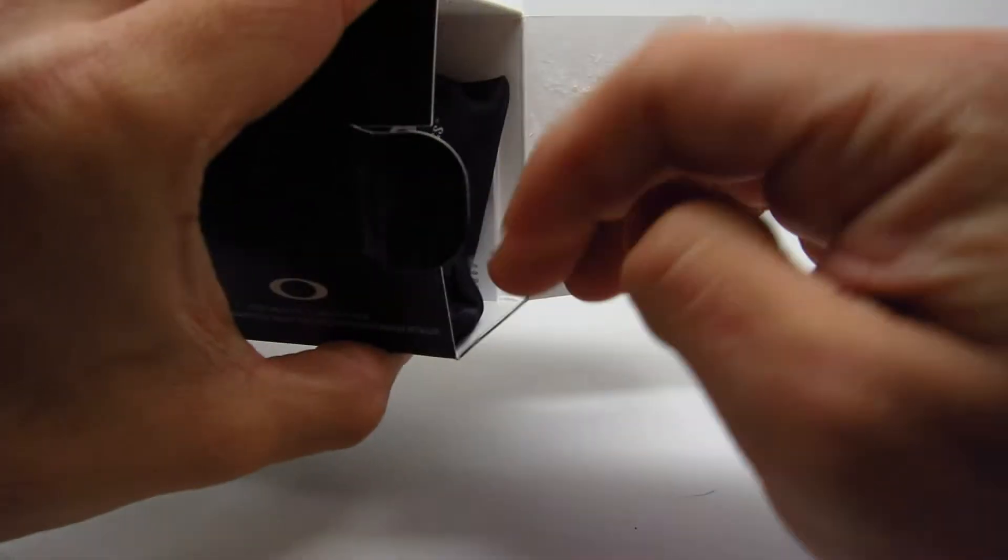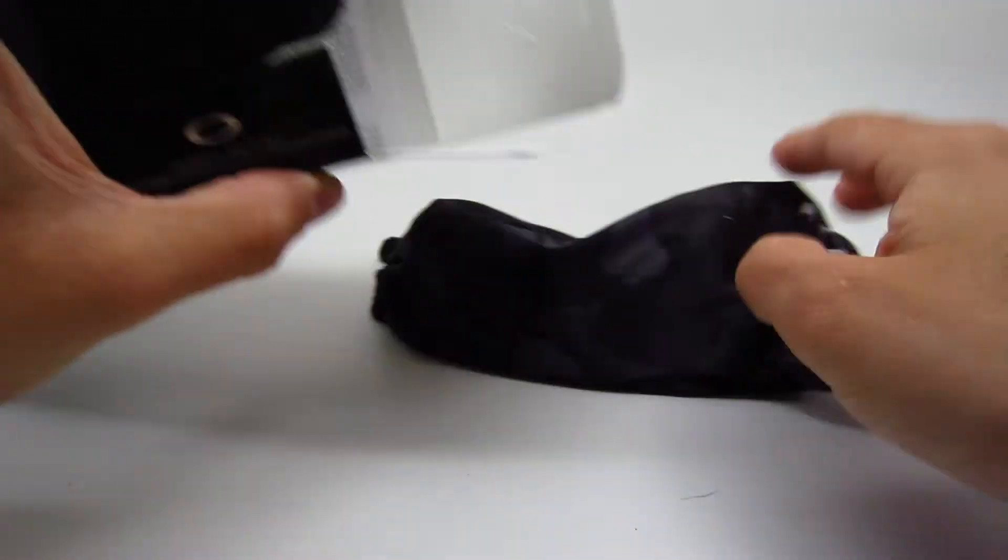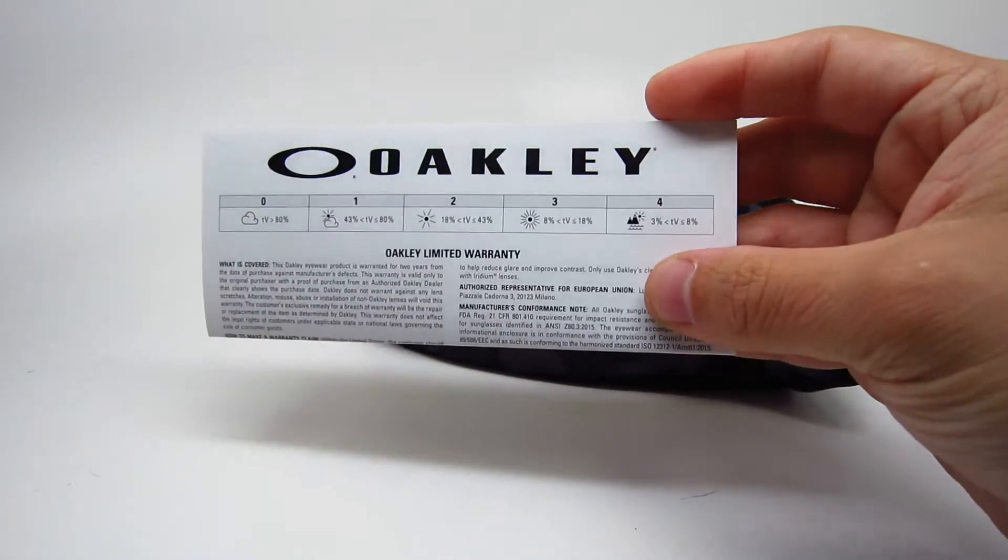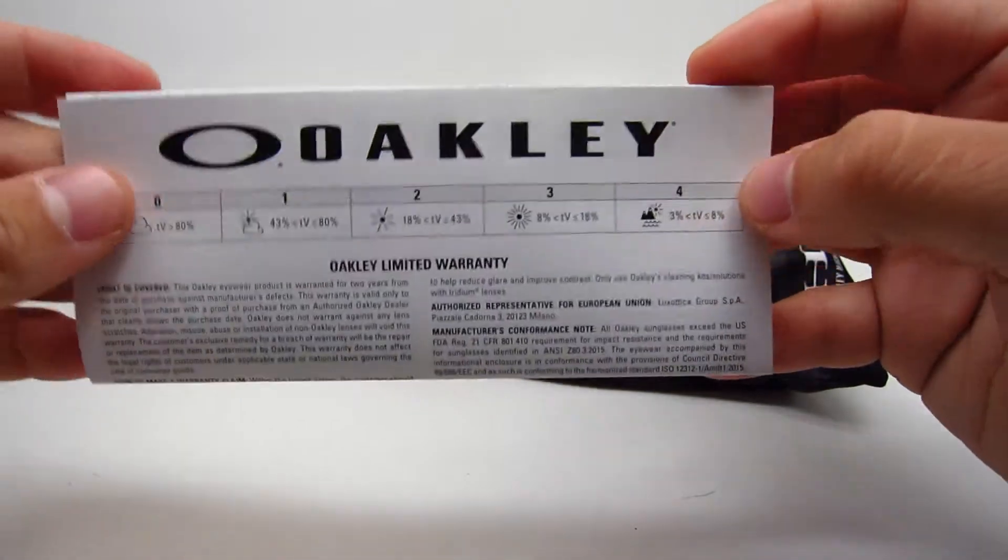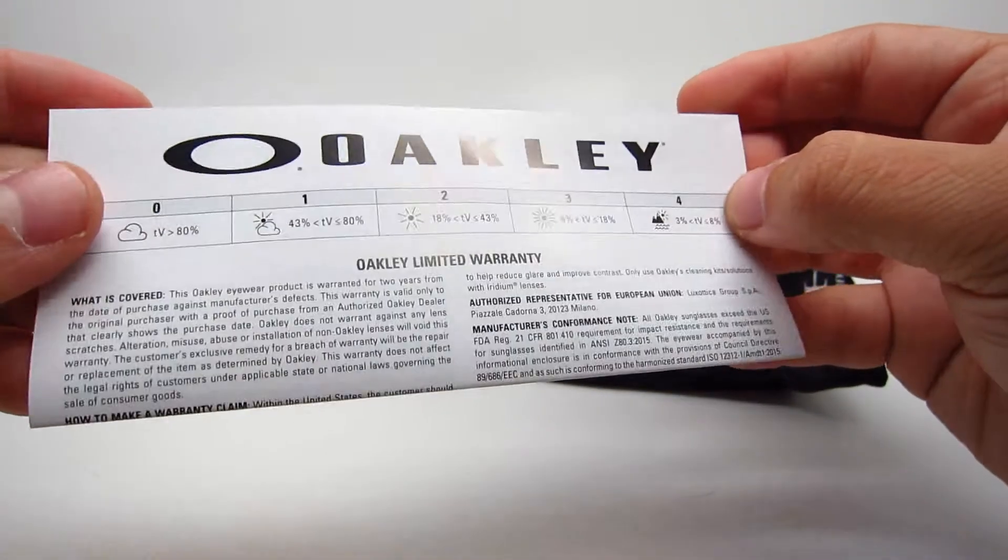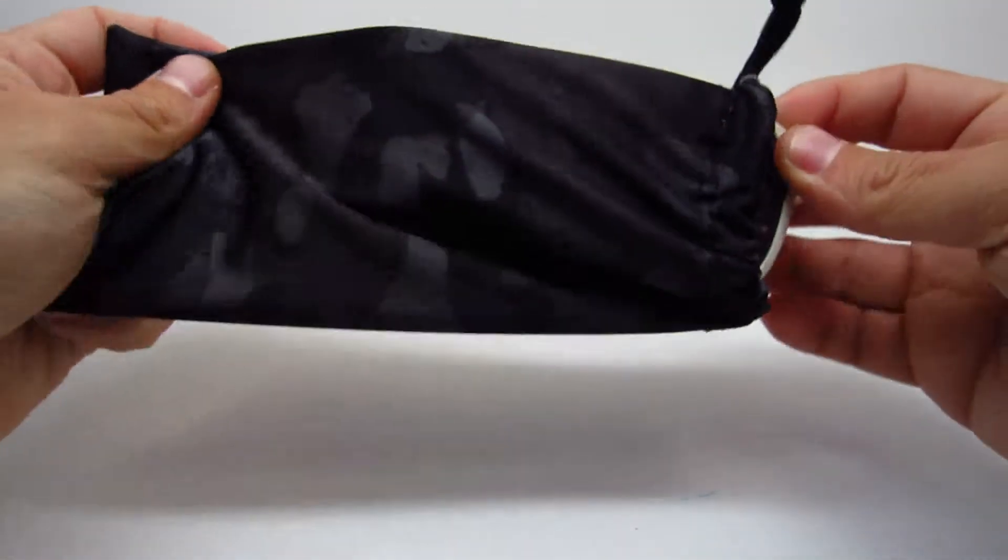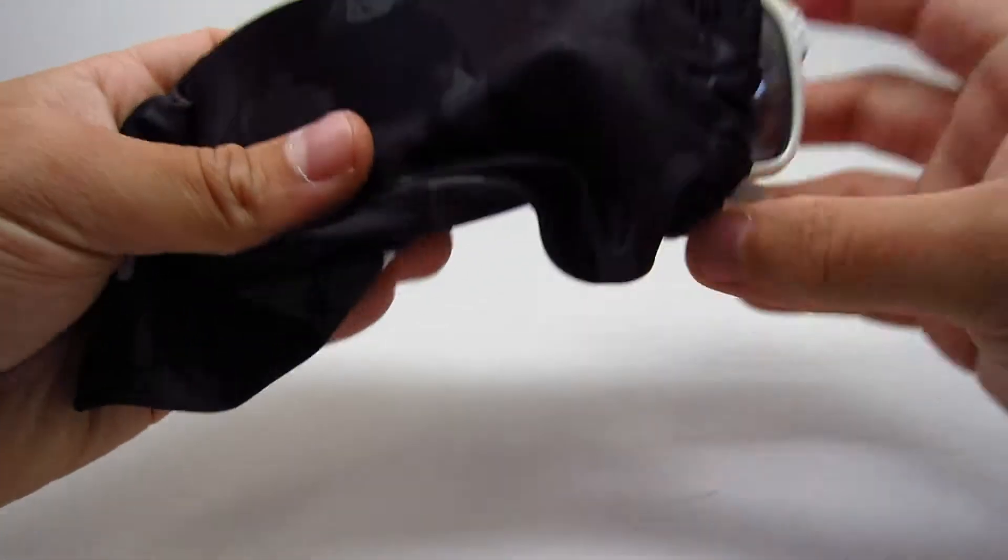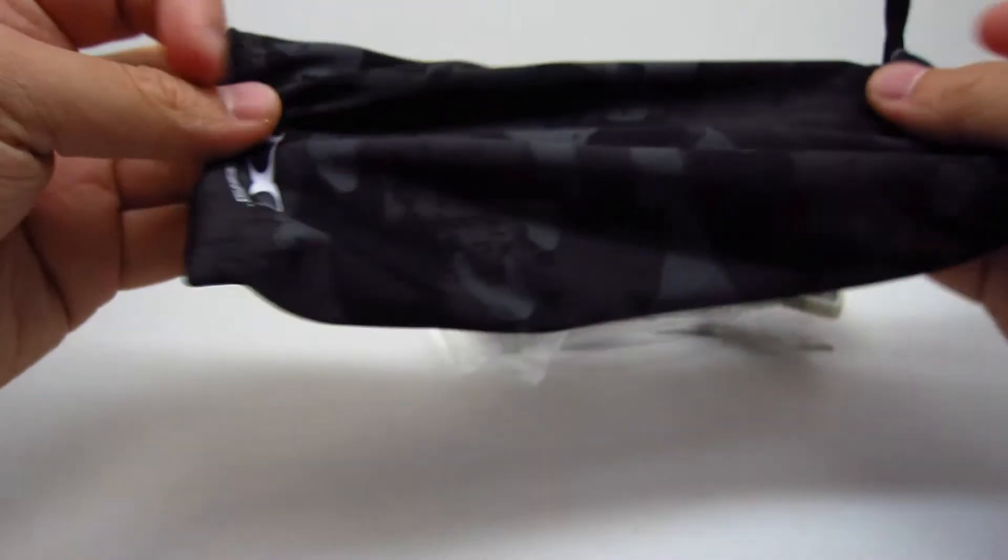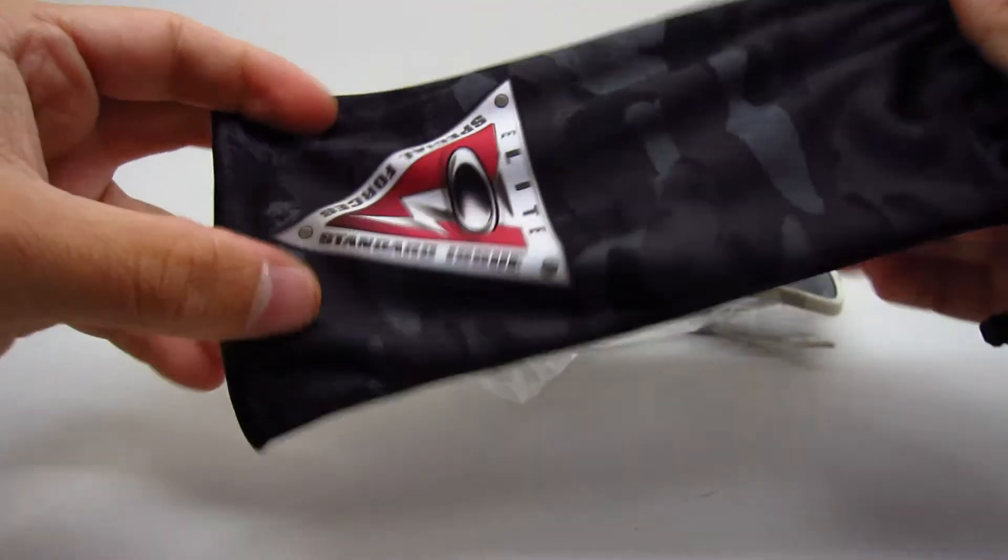Let's take a look inside. So it comes with the standard Oakley warranty booklet and it comes in this nice cloth slash pouch case. It does not come in a hard case. This will be your cloth and case.